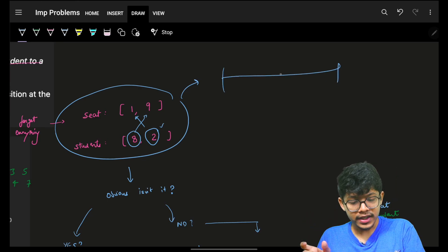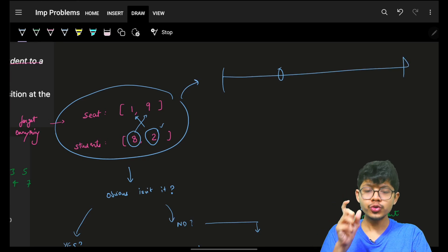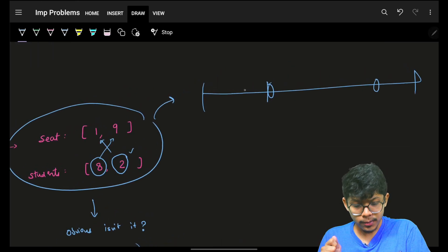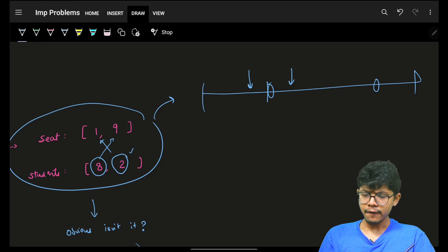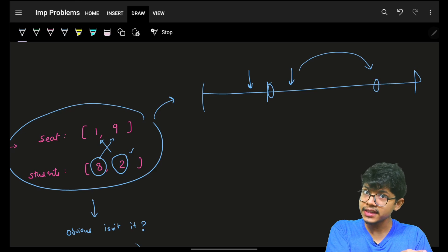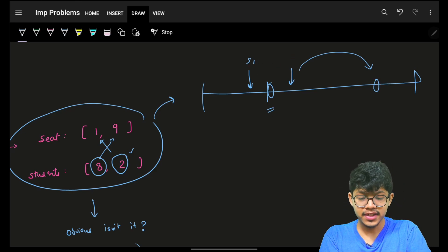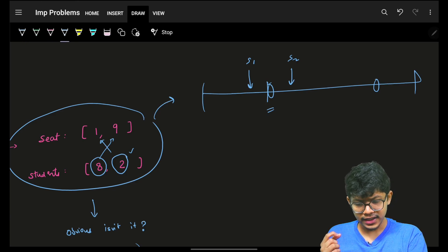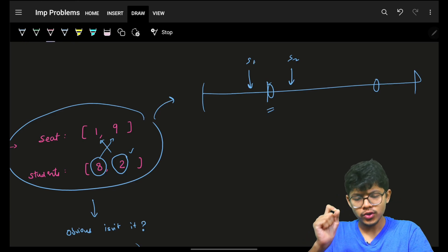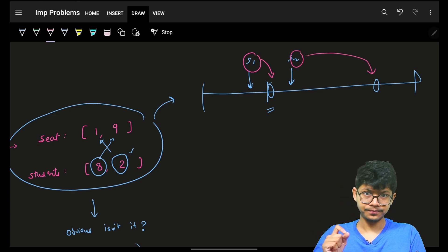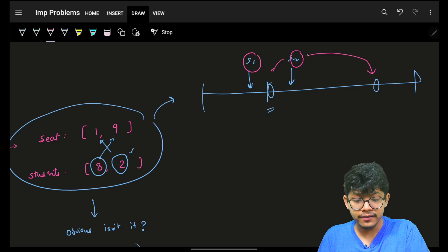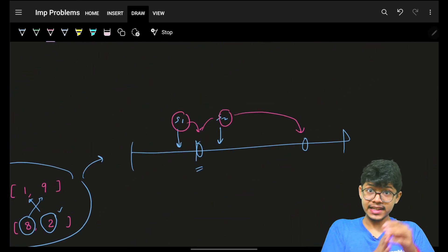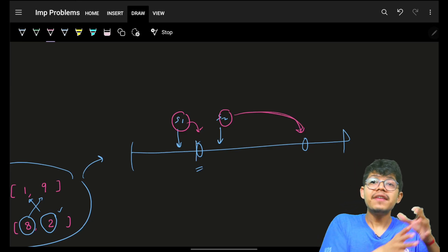But what if we have two students and two seats, and both students are near to a seat? Still, one student must go to the other seat because both students s1 and s2 cannot sit at the same seat. So we make s1 sit here and s2 sit there. The argument is that s1 goes to its nearest seat and s2 goes to the nearest available seat.